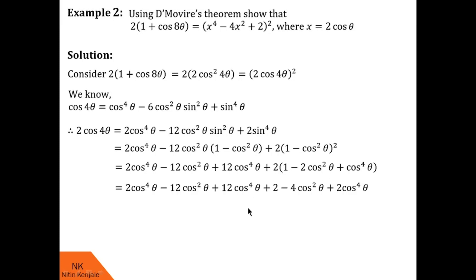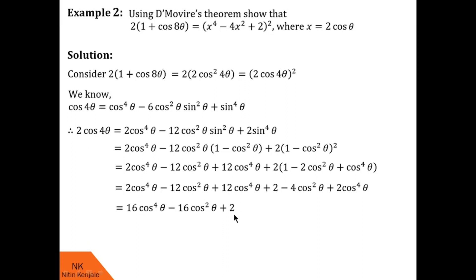Let us open this bracket as well. Now we combine terms of the same degree. We have 2cos⁴θ + 12cos⁴θ + 2cos⁴θ contributing to 16cos⁴θ, minus terms in cos²θ, and finally one constant term 2. So 2cos 4θ equals this expression. We substitute this value of 2cos 4θ back, giving 2(1 + cos 8θ) = (16cos⁴θ − 16cos²θ + 2)².